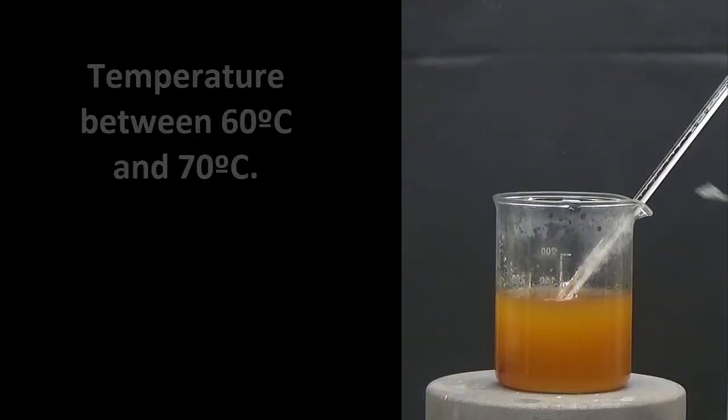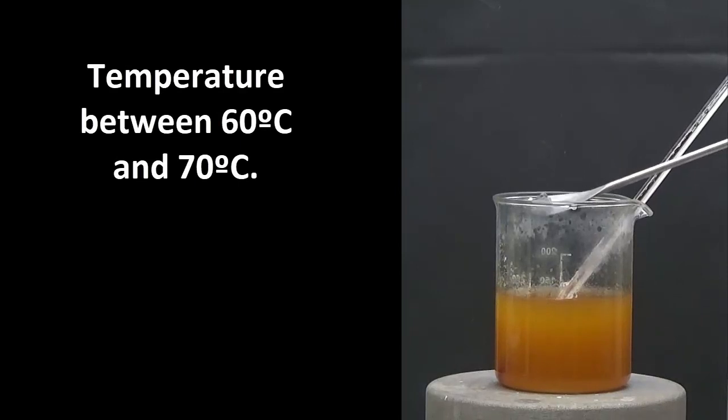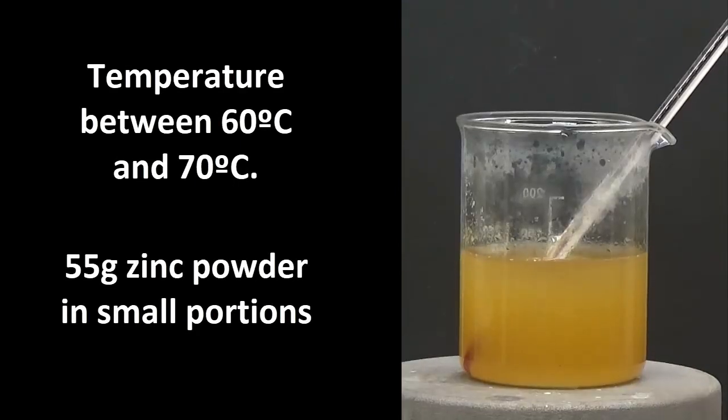With temperature at 60 degrees, 55 grams of zinc is added in small portions, making sure the temperature doesn't exceed 70 degrees. With too much zinc added, the reaction becomes violent and the temperature increases excessively.